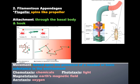External to the cell is, in some cases, flagella — those long filament-type structures that help with movement. The attachment point is through what's called the basal body and a hook.